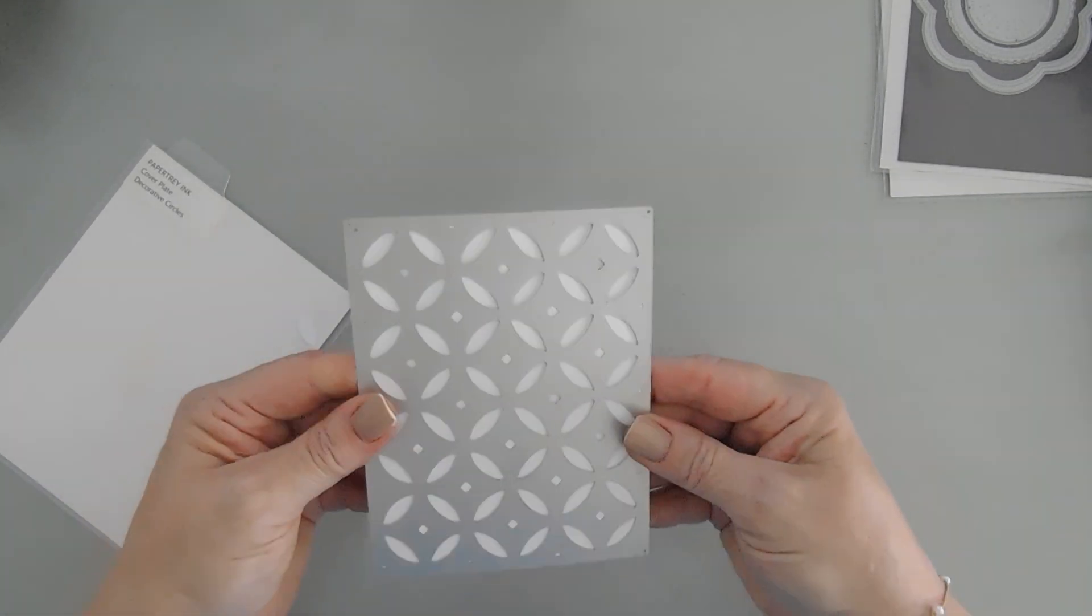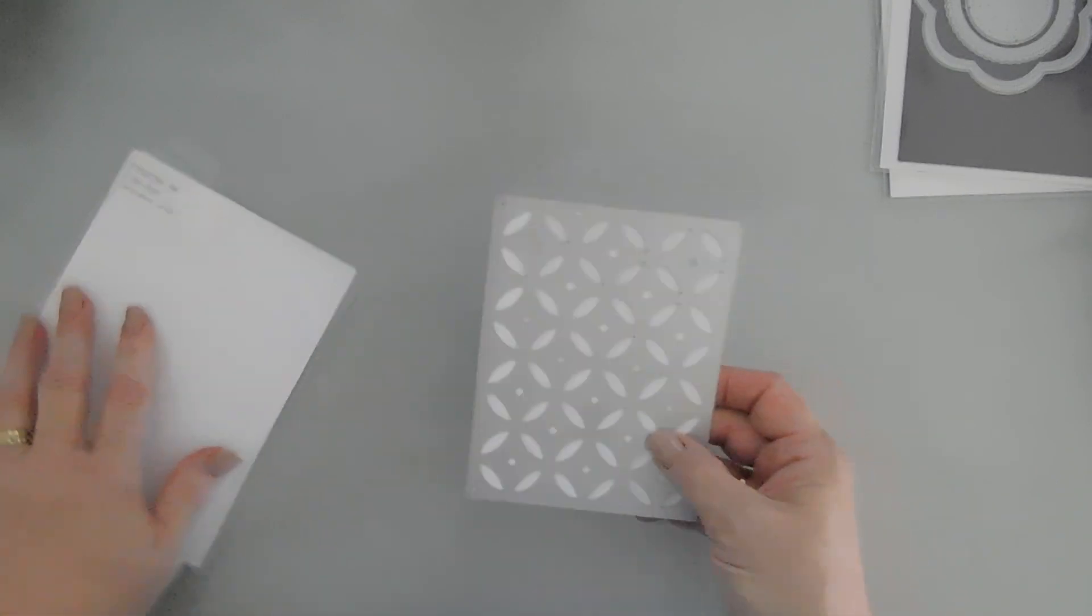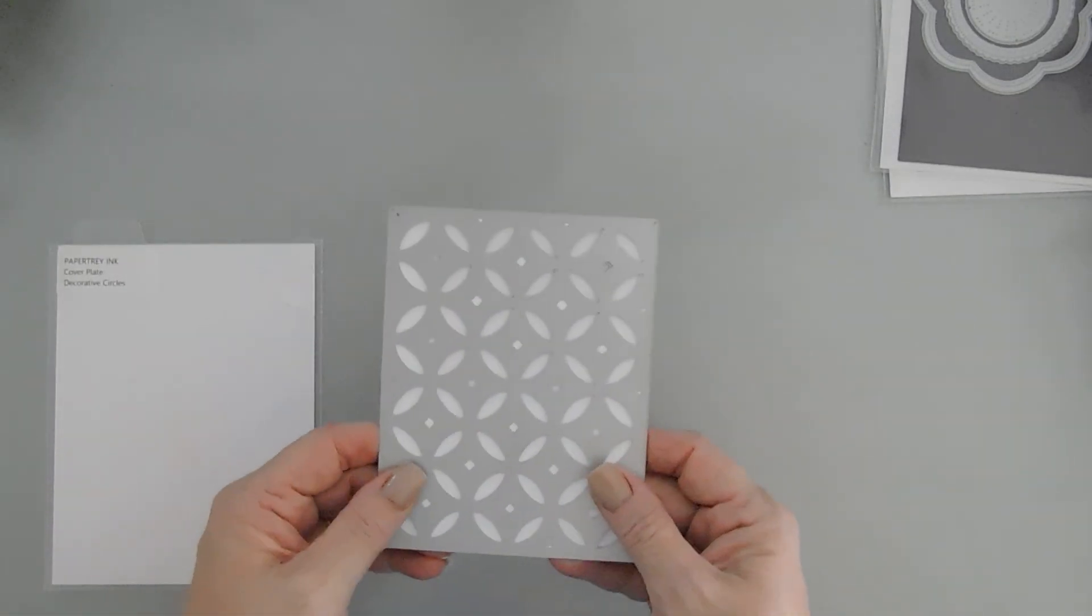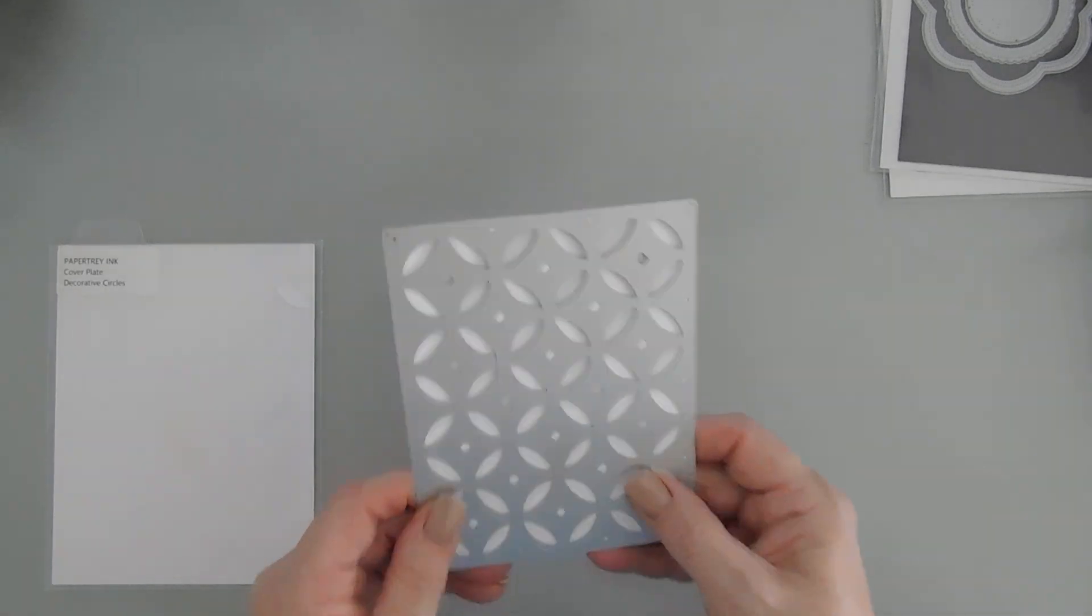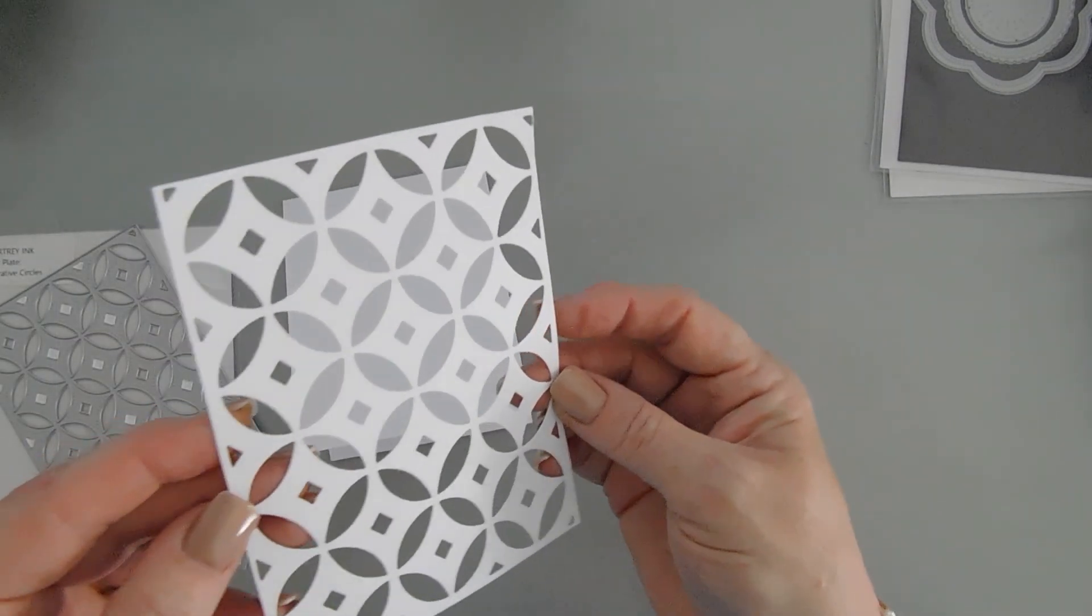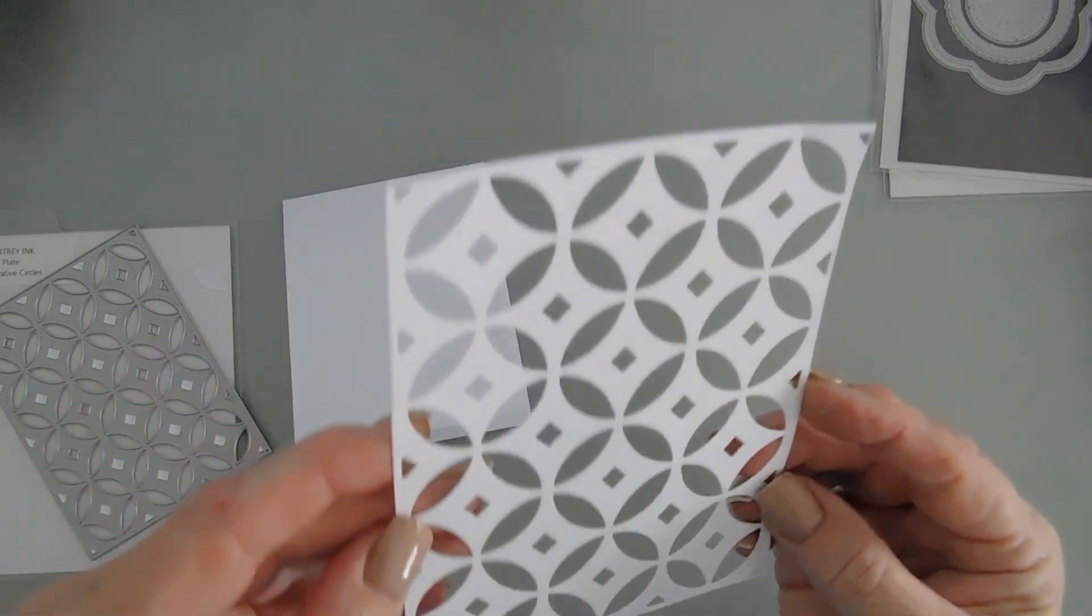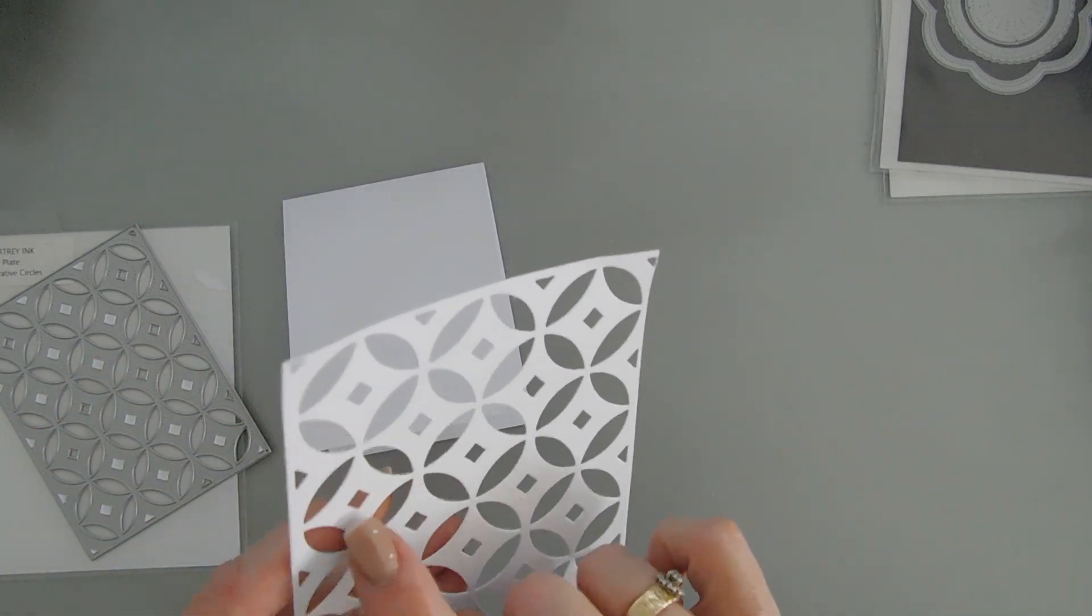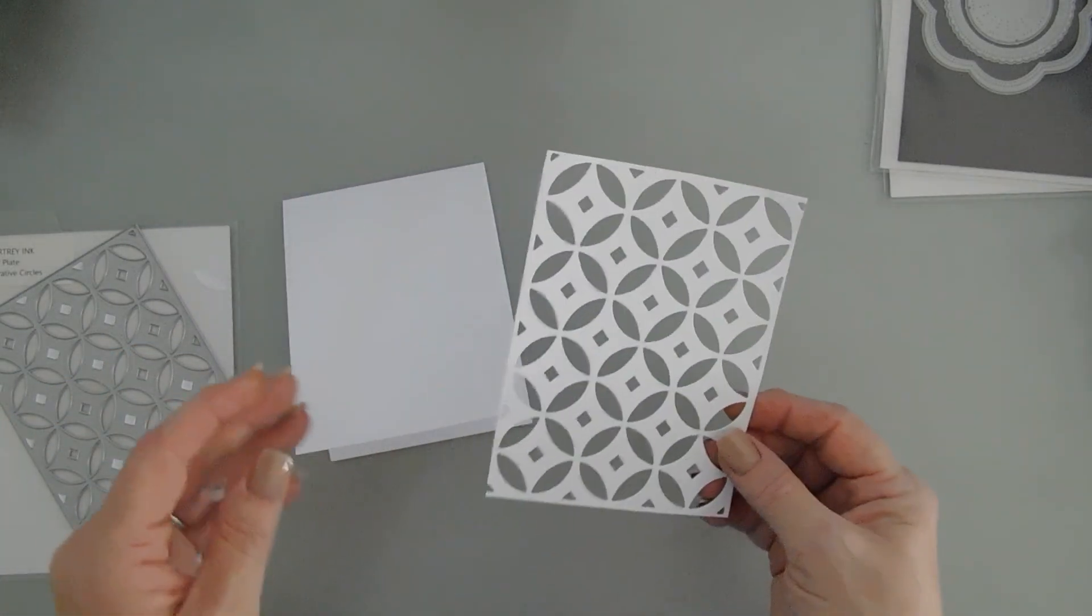It is an A2 panel, and I'll run this through my die cut machine and then we'll adhere this to our card base. This is what it looks like with white. And there is some dotted detail in here which makes it extra special.